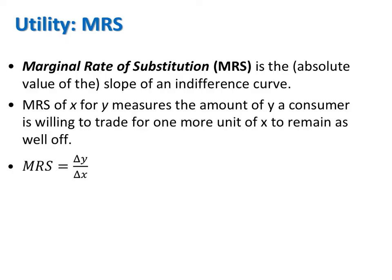The second way to graph an indifference curve uses both the marginal rate of substitution and the marginal utilities of goods x and y. Let me define the marginal rate of substitution, or the MRS for short. The MRS is the absolute value of the slope of an indifference curve. The MRS of x for y measures the amount of y a consumer is willing to trade for one more x to remain as well off. The MRS tells us the change in y needed when there's some change in x — it is a slope, so what we have is exactly rise over run.